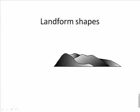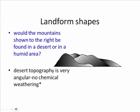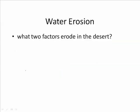Landforms in a desert tend to be distinctive. Would these rounded hills form in a desert or a humid area? The fact that they're rounded tells you it's probably a humid area, because desert topography is very angular. The reason is that deserts have very little chemical weathering because they have very little water. Water does erode in the desert, however, and another factor is wind.